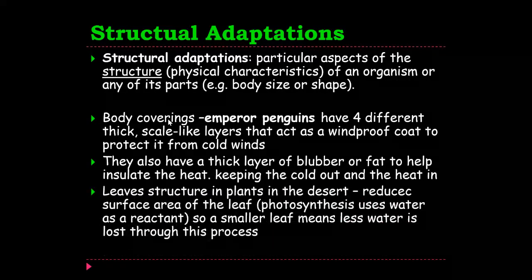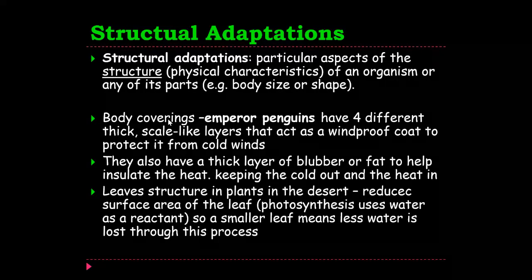This doesn't just happen in animals — it also happens in leaves, plants, and the plant kingdom. Plants in the desert need to reduce the surface area of the leaf because photosynthesis uses water as a reactant. If it has a very large leaf, it's going to lose too much water, so having a smaller leaf means less water is lost through this process. That's a way it has adapted over time in order to reduce water loss and survive in that difficult desert environment.